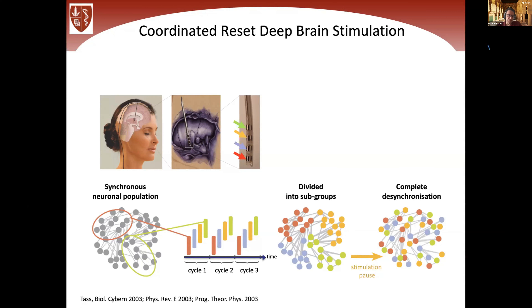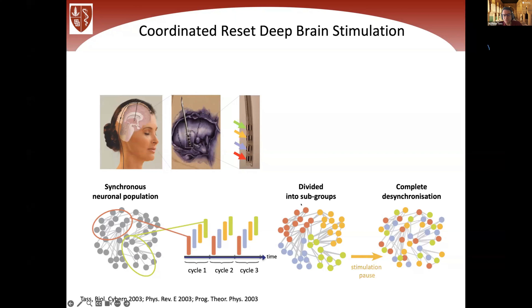Coordinated reset is very different. You use considerably weaker stimulation amplitude and stimulate at different sites at different times. Prior to stimulation, all neurons are in synchrony. Since you stimulate at different times at different sites, different clusters get out of phase. In this way, you disrupt synchrony across these cluster states. These are sequentially delivered coordinated reset stimuli.